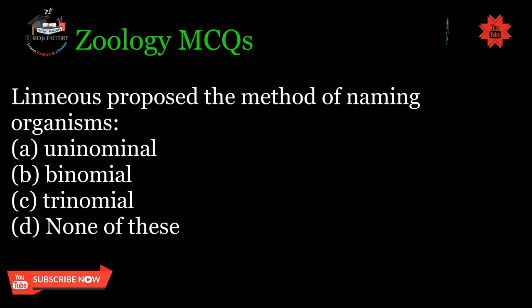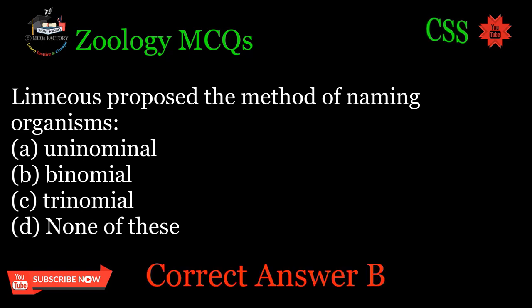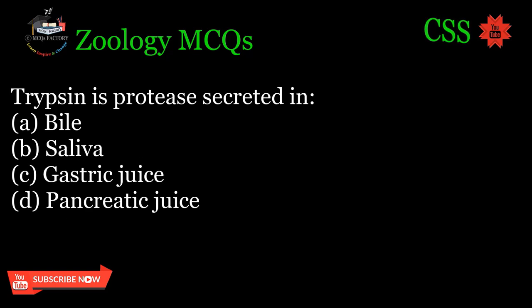Linnaeus proposed the method of naming organisms: A. Uninominal, B. Binomial, C. Trinomial, D. None of these. Correct answer: B.